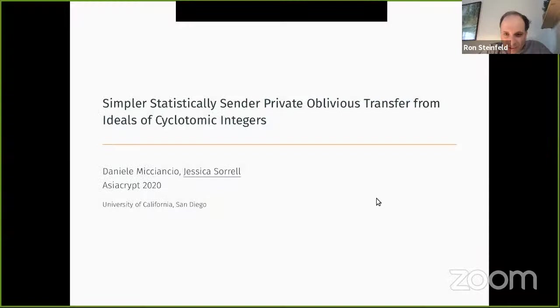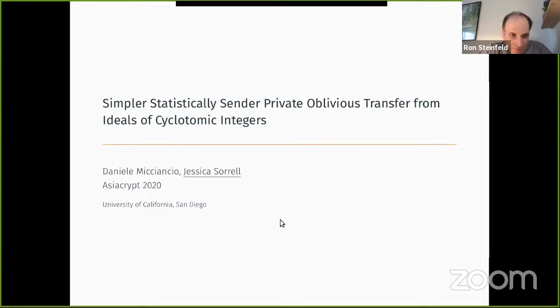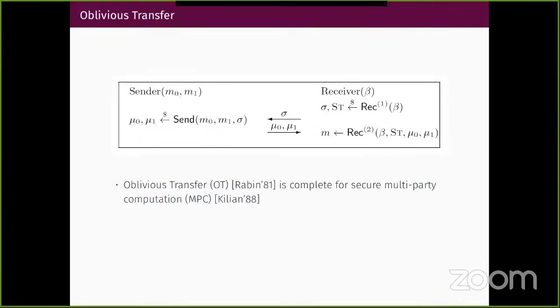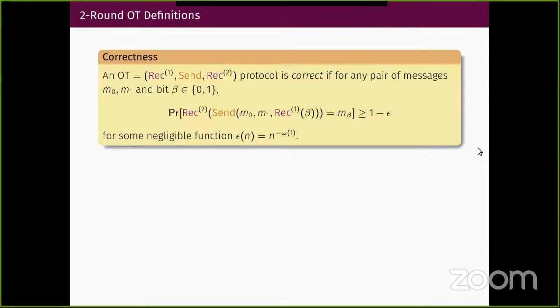The last talk for this session is titled 'Simpler Statistically Sender Private Oblivious Transfer from Ideals of Cyclotomic Integers' by Daniele Micciancio and Jessica Terrell. Jessica will present. Oblivious transfer is a protocol between a sender and a receiver. The sender has two messages M0 and M1; the receiver has a bit beta. The protocol allows the receiver to obtain the message corresponding to its bit without revealing the bit to the sender and without learning anything about the other message.